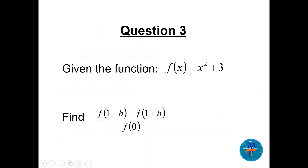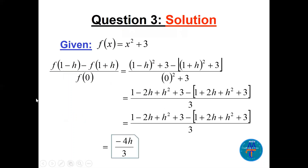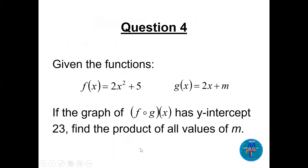Question 3: given f(x) = x²+3, find [f(1-h) - f(1+h)] / f(0). Replace x with each value: f(1-h) = (1-h)²+3. Apply the formula (a-b)² = 1 - 2h + h², and similarly (1+h)² = 1 + 2h + h². f(0) = 3. After simplification, the result is -4h/3.